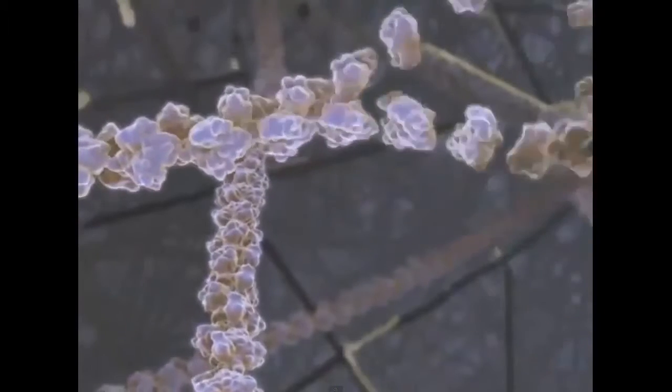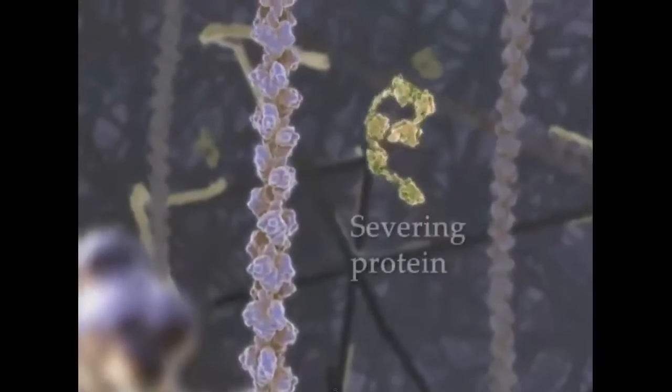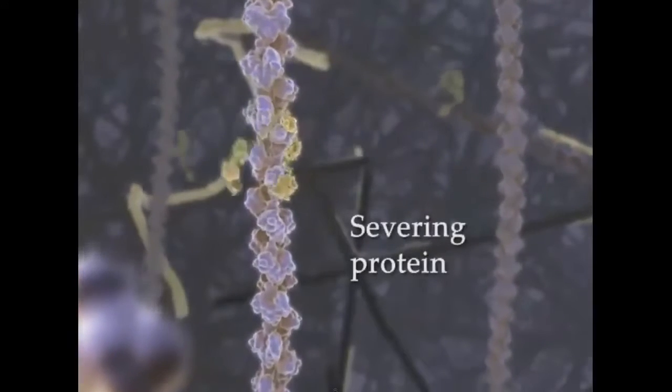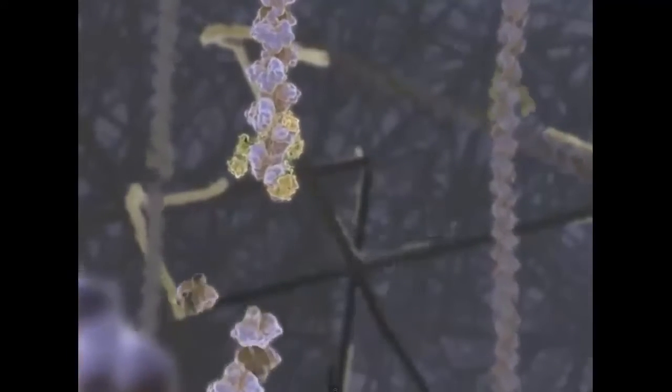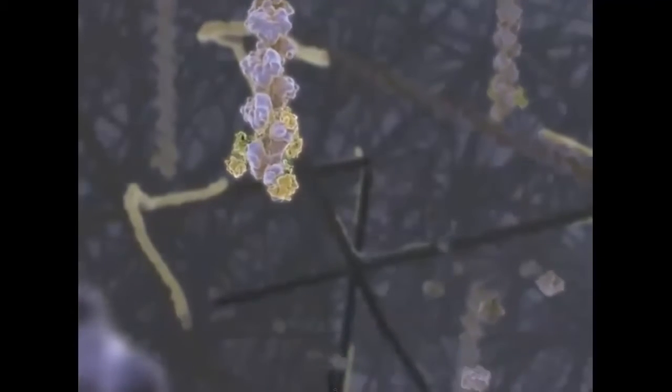The actin network is a very dynamic structure, with continuous directional polymerization and disassembly. Severing proteins induce kinks in the filament and lead to the formation of short fragments that rapidly depolymerize, or give rise to new filaments.